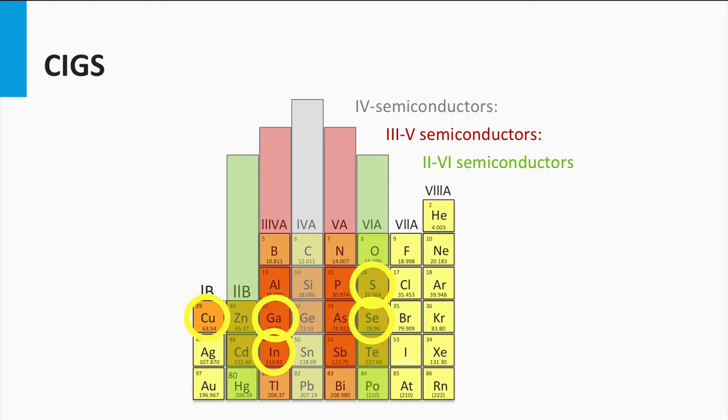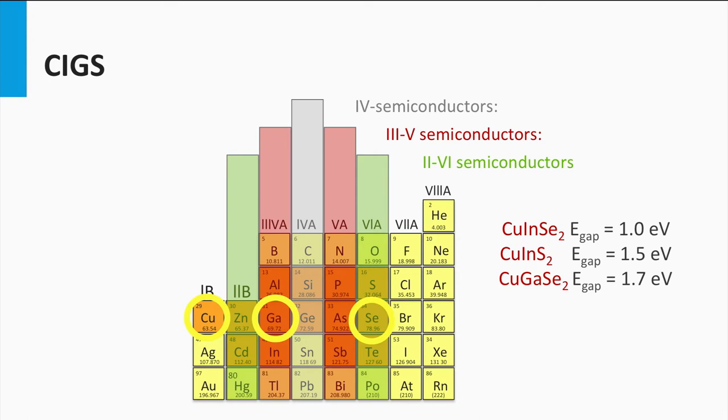Some important compounds in the material are copper indium selenide with a band gap of 1.0 eV, copper indium sulfide having a band gap of 1.5 eV, and copper gallium selenide having a band gap of 1.7 eV.